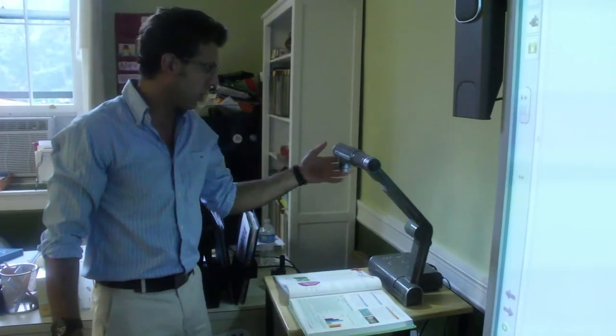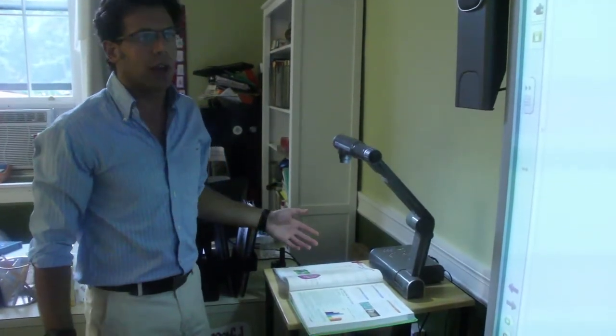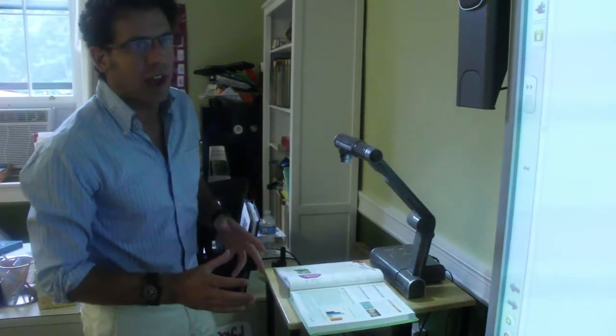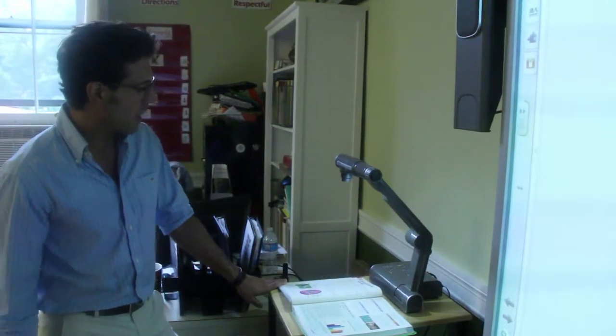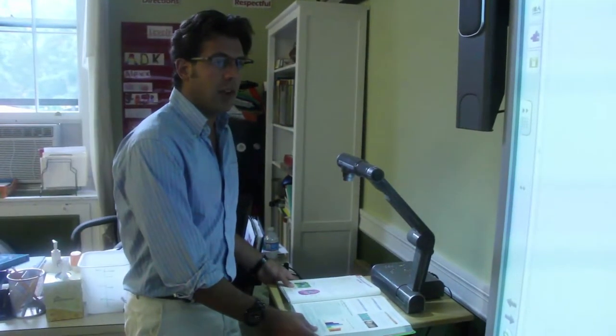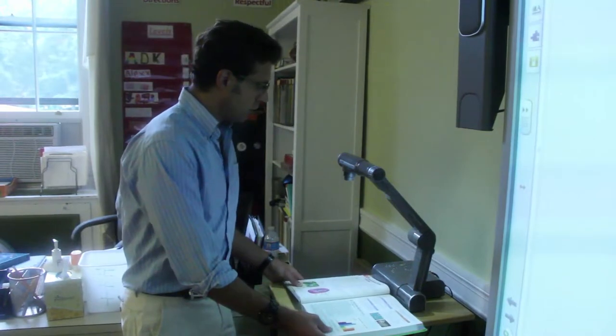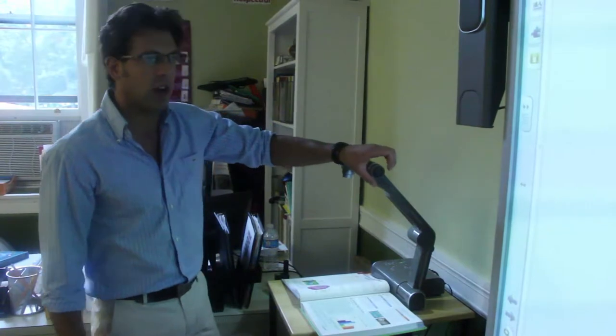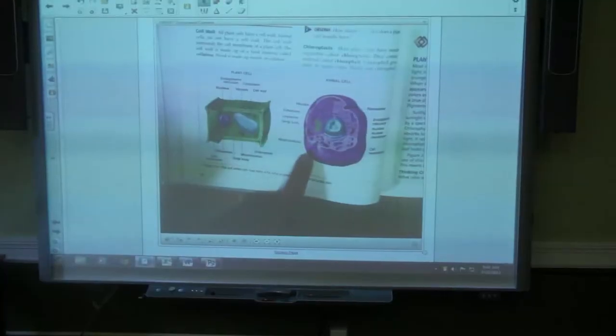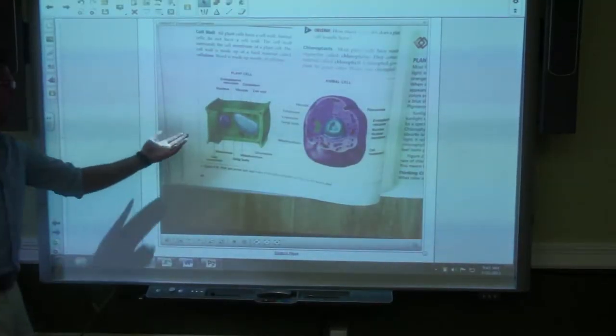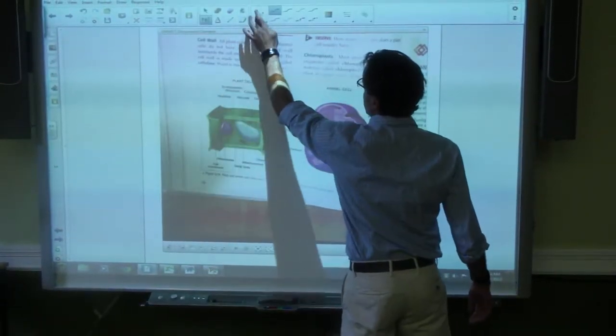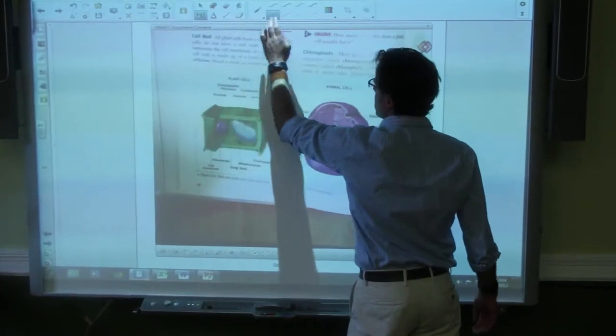So as you can see here we have our smart document camera and what this allows us to do is project images up onto our smart board. You can think of this as a really sophisticated overhead. So let's say we have a chapter that we're focusing on in biology and I really want to highlight a specific image or portion of text in our textbooks. I'm able to do so for the whole class to see. From here we can zoom in on our animal cell which is connected to our biology curriculum.